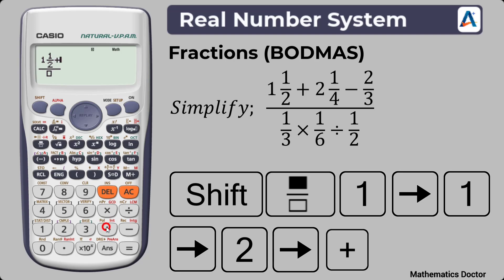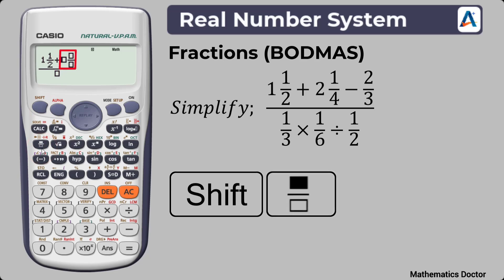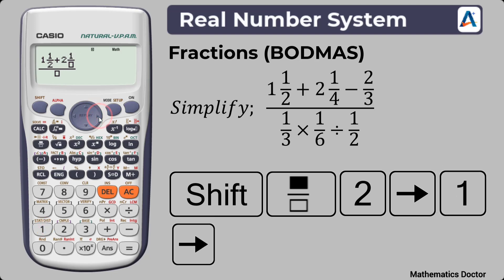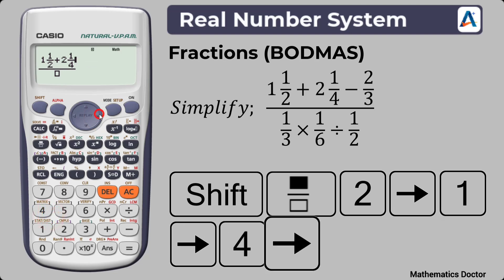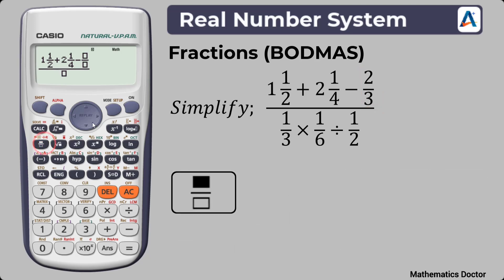The operational sign there is addition. Press Shift and then press the fraction key to get the mixed fraction, since the next number is also a mixed fraction. The whole number part is 2. Shift the arrow key right to get to the numerator and press 1. Shift the arrow key right to get to the denominator and press 4. Shift the arrow key right to move to the side of the fraction. Then press minus, and finally enter the fraction 2 over 3 by pressing the fraction key and inputting 2 over 3.